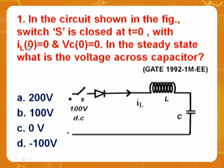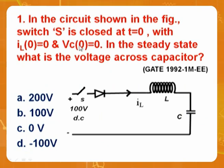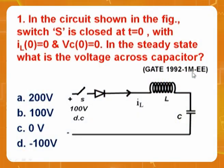Observe here — the question says I_L(0) without specifying plus or minus. It is implied, because I_L(0 plus) and I_L(0 minus) are always the same. Similarly, V_C(0 plus) and V_C(0 minus) are the same. Also note that 'steady state' means t equal to infinity. Whenever you hear this word 'steady state,' that means t equal to infinity. This is a GATE 1992 one-mark question with a diode in the circuit.